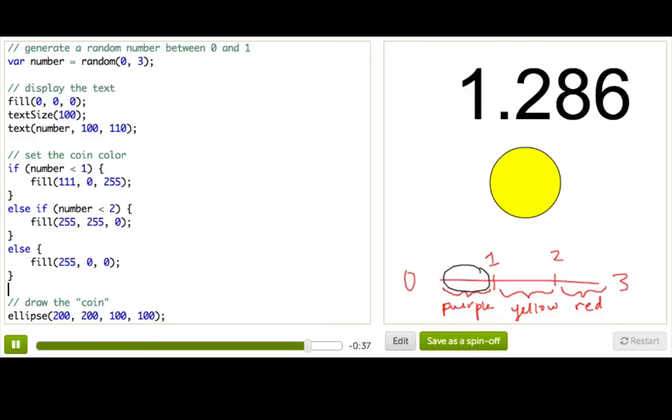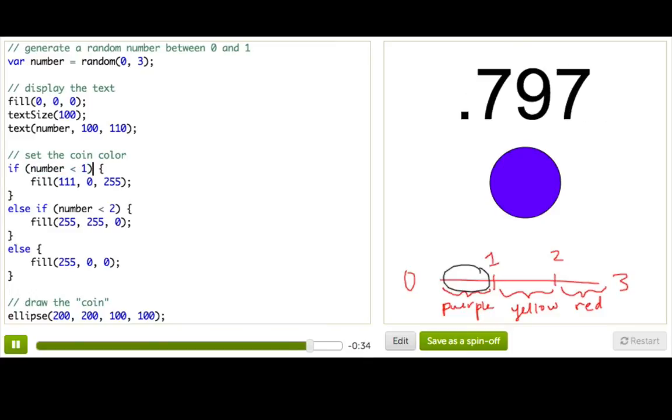Great. And it works just as intended. So if the number was less than 1, then again, it's in this range. Otherwise, it's greater or equal to 1, but it's also less than 2. So that puts it in this range. So we're going to set the color to yellow. Otherwise, it must be greater than or equal to 2.